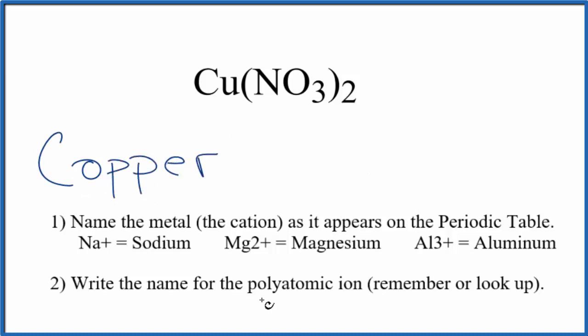Then we write the name for the polyatomic ion. That's the nitrate. Good one to remember. And so far we have copper nitrate for the name for Cu(NO3)2.